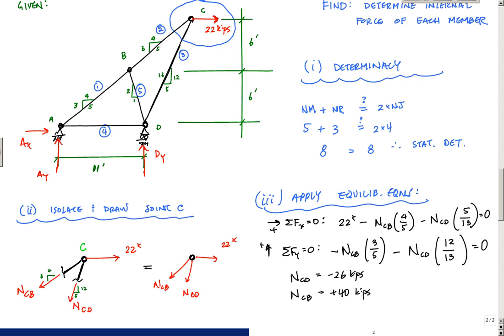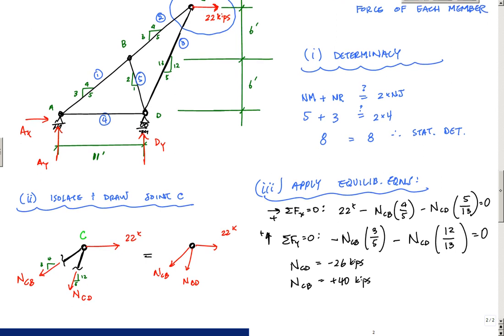So let's go to joint B next because we know joint B, we know the force in BC which is 40 kips and we have two other members framing into joint B, and that will leave us with two unknowns and two equations. So let's draw out joint B.